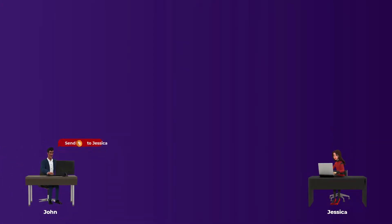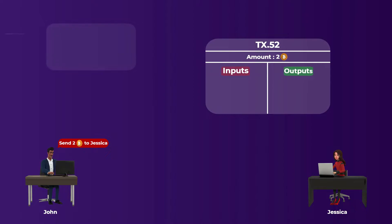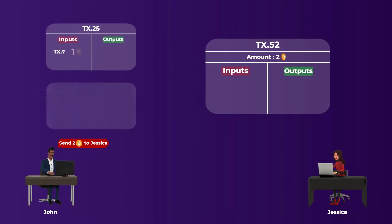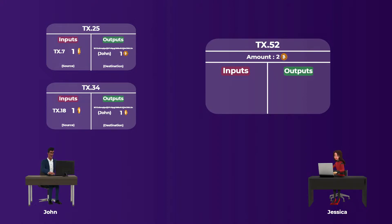Let's say that John wants to send two bitcoins to Jessica. To prove that he has these two bitcoins, his transaction to Jessica needs to link or refer to previous transactions where he received two bitcoins or more. So here are two previous transactions where John received his bitcoins. A bitcoin transaction has two sections: inputs and outputs. In inputs, the source of the coins is mentioned. In outputs, the destination is stated. Transaction number 25 has an output to John for one bitcoin, and transaction 34 has another output to John for one bitcoin.